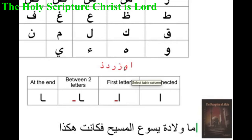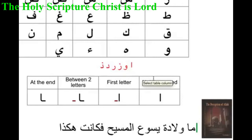This is alif and this is wa, the second one. Remember we are reading from right to left — don't be confused. In Arabic we read and write from the right to the left. So I'm starting with the letter alif, then wa, za — or we call it zain — za, ra, da. Those letters don't accept any connection from the left.